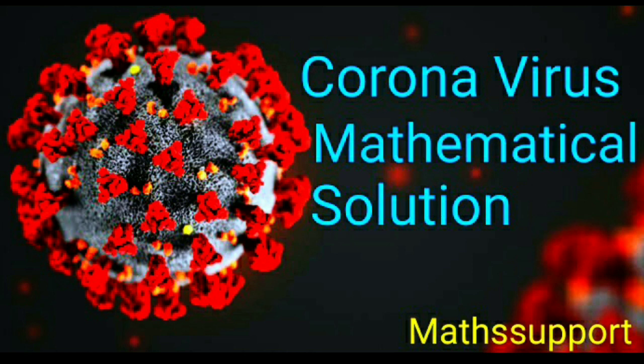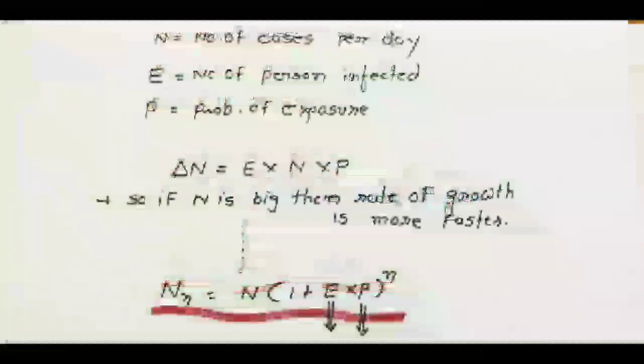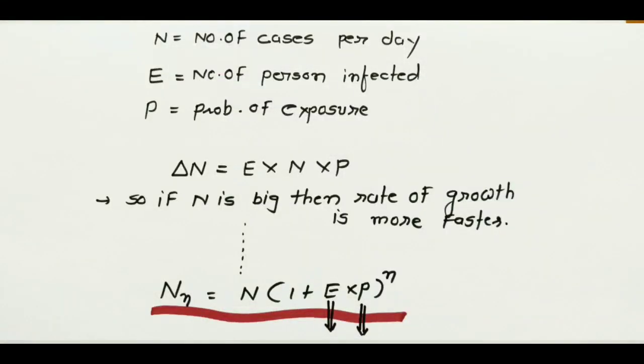I have just found some mathematical solution for this Corona. We just call it exponential growth. First of all, we have to understand how exponential growth is happening. What is the reason? And by graph, we have some solutions to try to solve this problem. So how can we stop this problem?